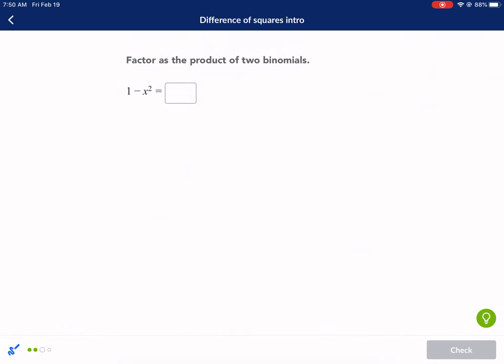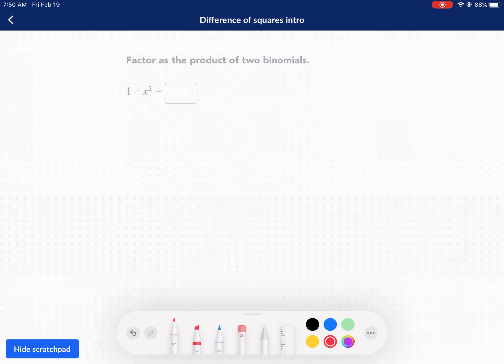Back to the product to two binomials. Okay, recognize that we got two perfect squares. That's important. That's a perfect square. That's a perfect square. Get our parentheses one, two, one, two.